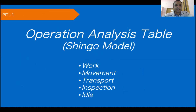Productivity Improvement Technique 1 (PIT 1) is the Operation Analysis Table, which is used to identify non-value-adding activities of different operators — such as movement, transport, inspection, and idle time — and the initiatives you can take to reduce these and improve the work content of operators. This model is also called the Shingo Model.